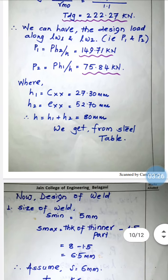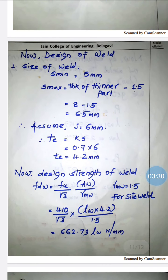Moving on to design of the weld. First, we find the required weld size. From IS 800 Table 21, Page 78, s_minimum and s_maximum are defined. s_maximum = thickness of thinner part minus 1.5mm. The two elements are a plate (12mm) and an angle (8mm), so the thinner part is 8mm. Thus 8 - 1.5 = 6.5mm. We choose a weld size s = 6mm. The effective throat thickness te = k × s = 0.7 × 6 = 4.2mm.